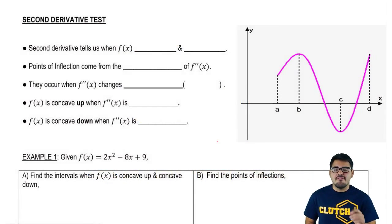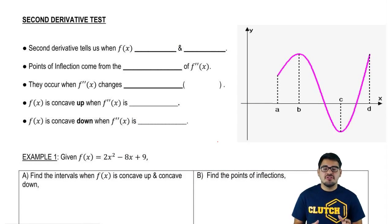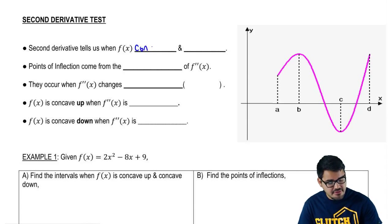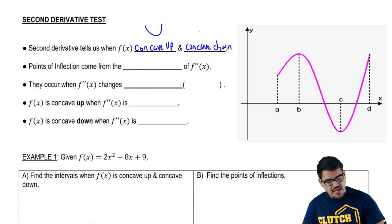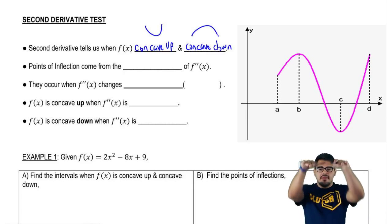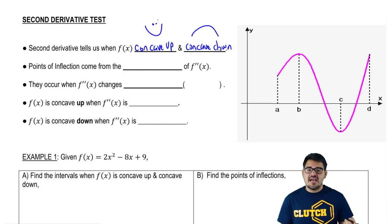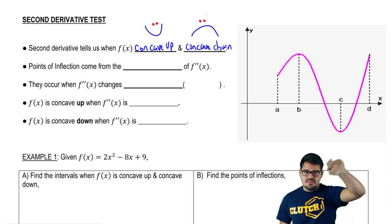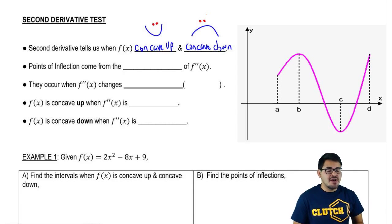The second derivative tells us when f(x) is concave up and concave down. Concavity can be broken into two types: concave up and concave down. Concave up looks like an open bowl shape, and concave down looks like an upside-down bowl. We can relate concave up to being happy — when you're up, you're happy — and concave down to being sad.